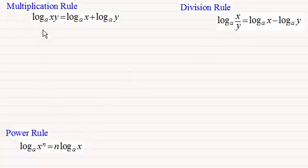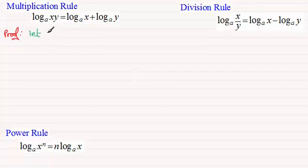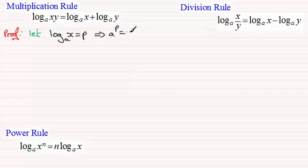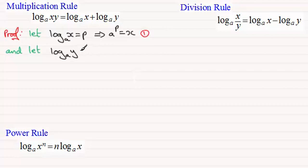So if we start with the first one, the multiplication rule: the log of xy in base a is equal to the log of x in base a plus the log of y in base a. To prove it, let's start with the proof. If I let the log of x in base a equal p, then from this it follows that a to the power p must equal x — basic rule of logarithms. I'll call this result one. Also suppose I let the log of y in base a equal q.